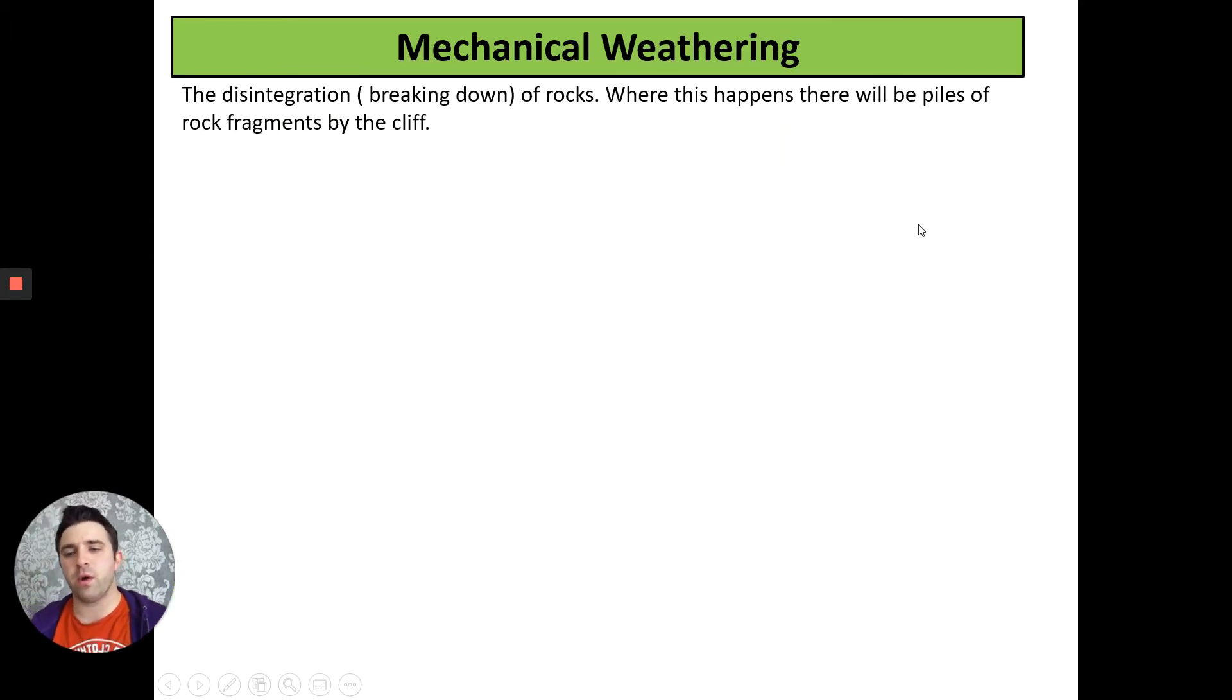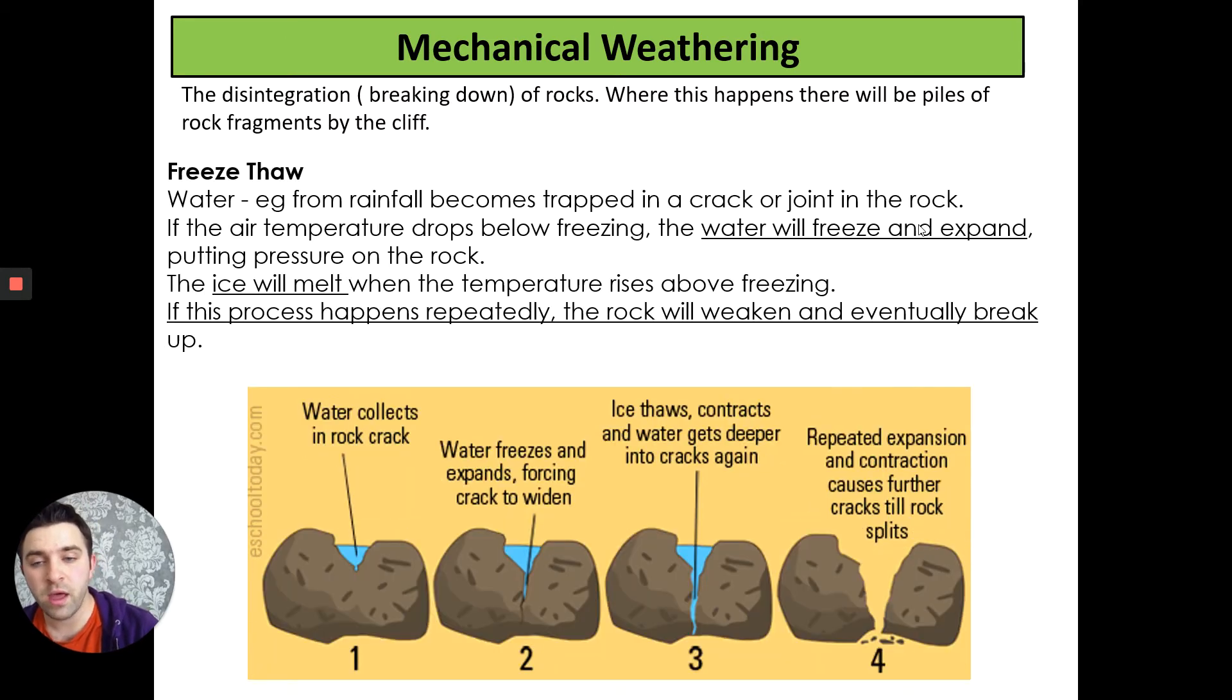Let's talk about weathering. Weathering is the disintegration or breaking down of rocks. Where this happens there will be small piles of rock fragments by the cliff. This isn't by the water or the coastline, this is by other processes. We can split this into two types: mechanical weathering.